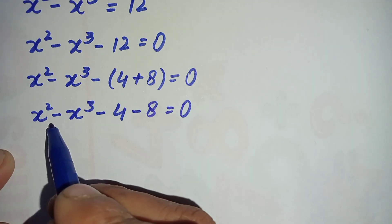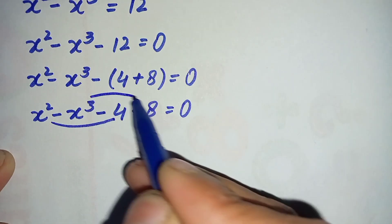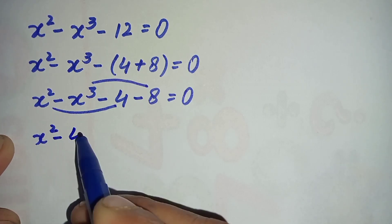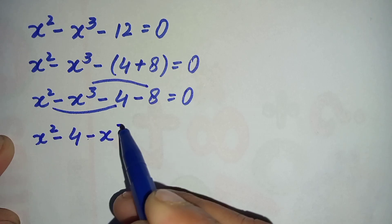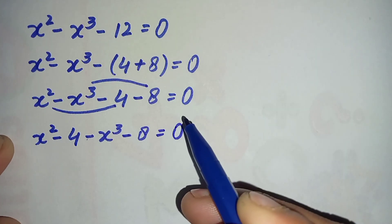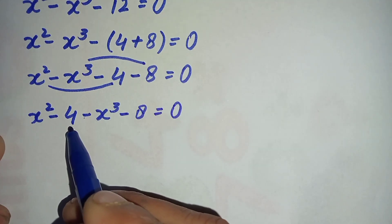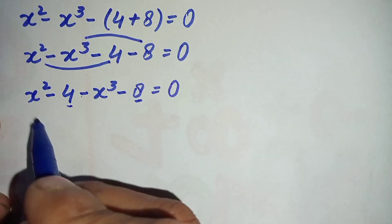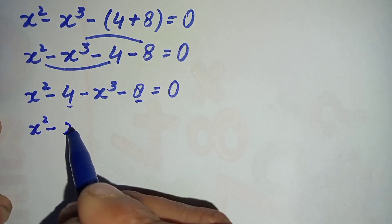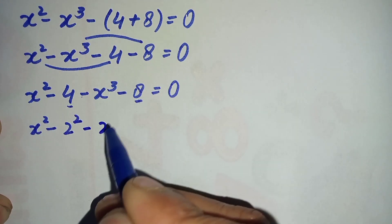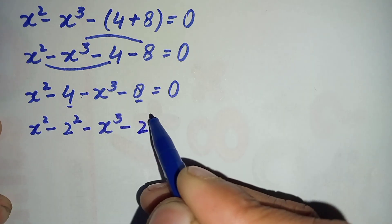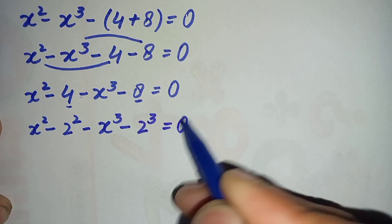In the next step, we combine x squared with 4 and x cubed with 8, so it becomes x squared minus 4 minus x cubed minus 8 is equal to 0. We then write 4 and 8 in their exponential form: 2 squared and 2 cubed.